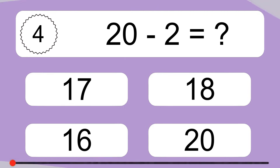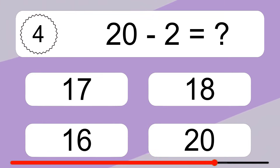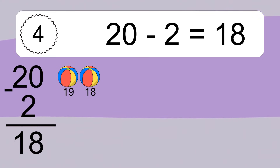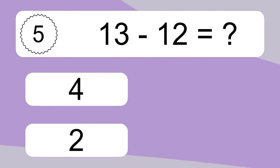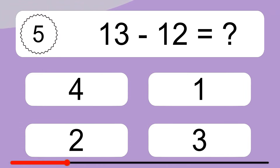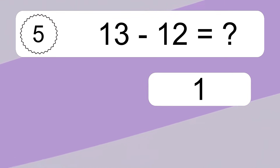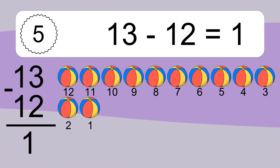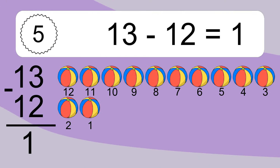20 minus 2 equals 18. Let's count it: 12, 11, 10, 9, 8, 7, 6, 5, 4, 3, 2, 1.